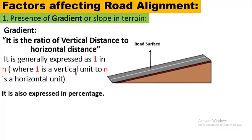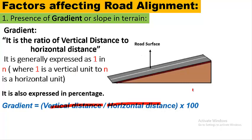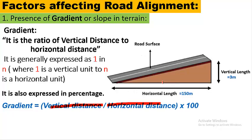Gradient is also expressed as a percentage. The formula is: vertical distance divided by horizontal distance, multiplied by 100. For example, if a road has a horizontal distance of 150 meters and a rise of 3 meters, then gradient = (3 ÷ 150) × 100 = 2%. This means that one end is 2% higher than the other. There are certain limitations on gradient which we will discuss next.